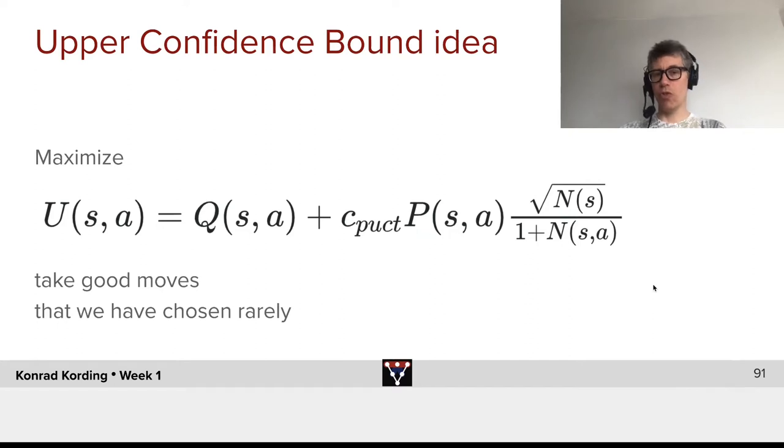So the parameter here, c_puct, upper confidence tree is what UCT stands for. And this parameter regulates the trade-off of how important it is to observe new things versus how important it is to follow moves that we think are good.